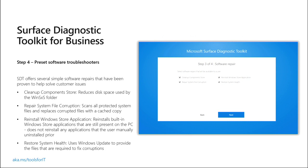There are a couple of preset software troubleshooters you can also configure as part of this default package. One of them is the component store, which cleans out the Windows SXS folder and helps reduce some disk space. You also see the option to repair any file system corruption, which will perform a check on Windows without you having to go into command prompts separately. We also have the ability to reinstall the Microsoft Store — if you purposefully deleted it, you don't need to reinstall it, but it gives you that ability.